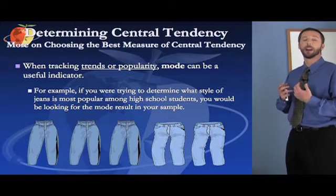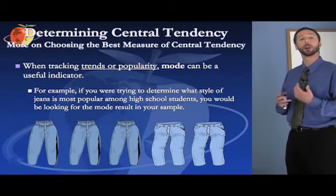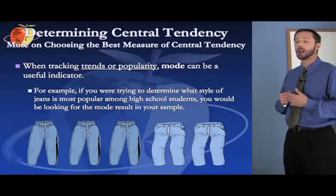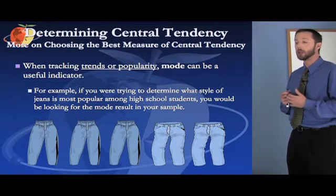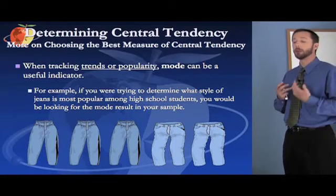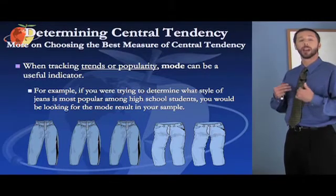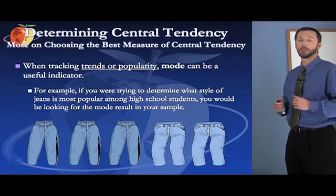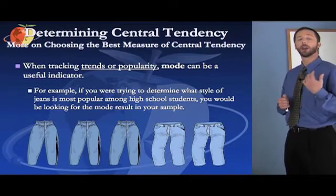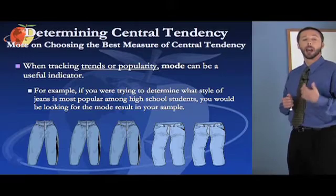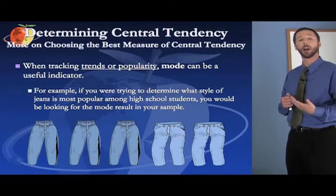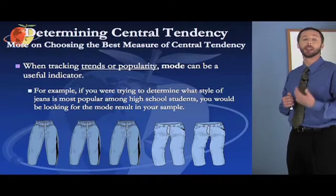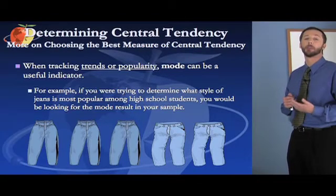If you're trying to find what member occurs the most — for example, if you're trying to determine what style of jeans is most popular among high school students — you would look for the mode result. Whichever type of jeans occurs most often is the most popular — that's the mode. So that's how you find mean, median, and mode, and also why one versus another may be a better measure of central tendency depending on the particular case you're looking at.